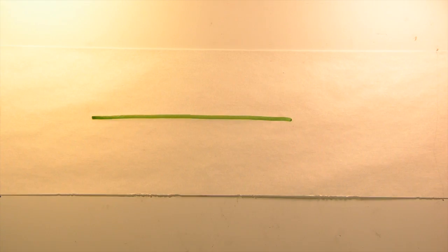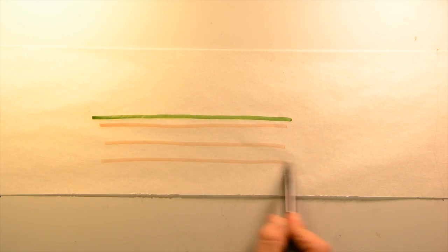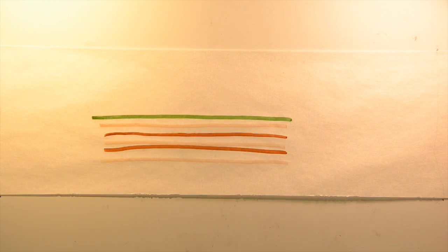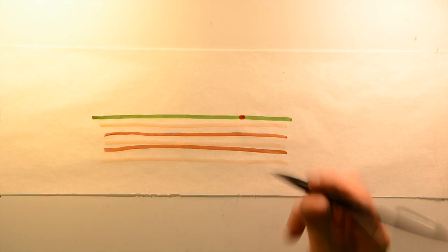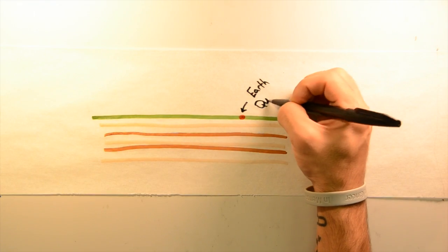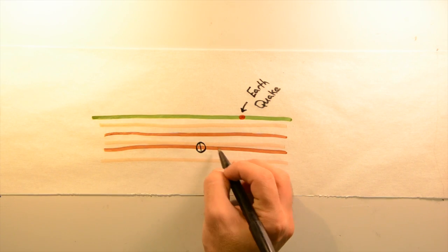Surface waves, on the other hand, can only move along the Earth's surface in its outer crust. They have lower frequency than body waves and are therefore easily distinguished on a seismograph.